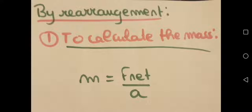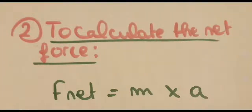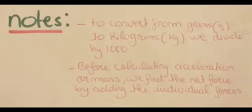By rearrangement of this law, we can calculate the mass if we know the net force and the acceleration: mass is equal to net force over acceleration. To calculate the net force: net force is equal to mass times acceleration. Note: to convert from grams to kilograms, divide by 1,000. If the mass is given in grams, divide it by 1,000 to get kilograms before calculating. Also, before calculating acceleration or mass, find the net force by adding the individual forces according to their directions, then put them in the equation.